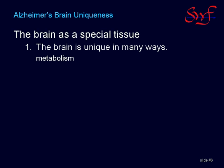Brain neurons also have a unique shape, involving very long and thin extensions, or branches, called axons and dendrites, which form the neural networks necessary for cognitive function. This requires a unique reliance upon a transport system called microtubules, that move materials from the center nucleus of the cell down the axons and dendrites to the periphery of the neurons, where the receptors for neurotransmitters are located. They also move materials back to the nucleus.